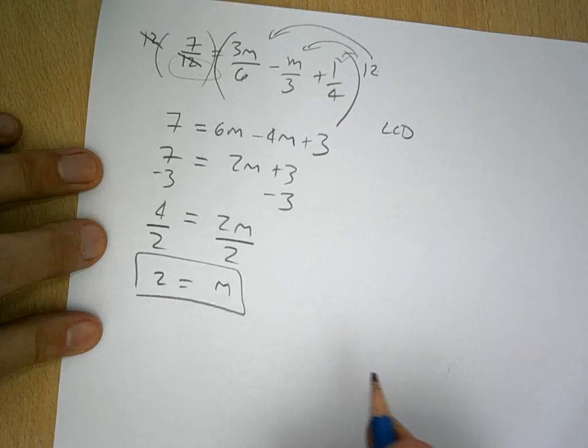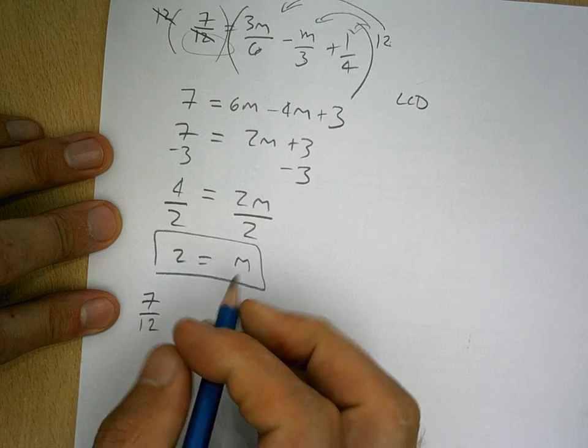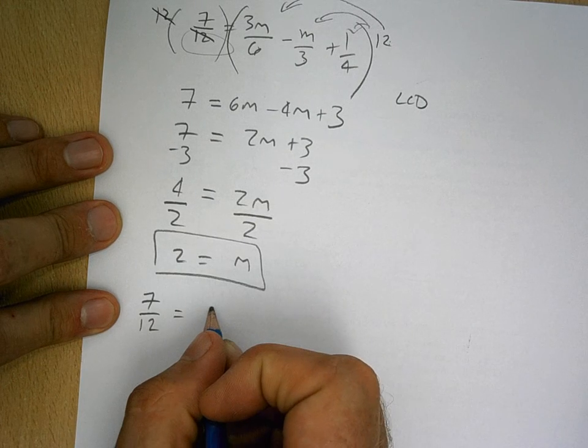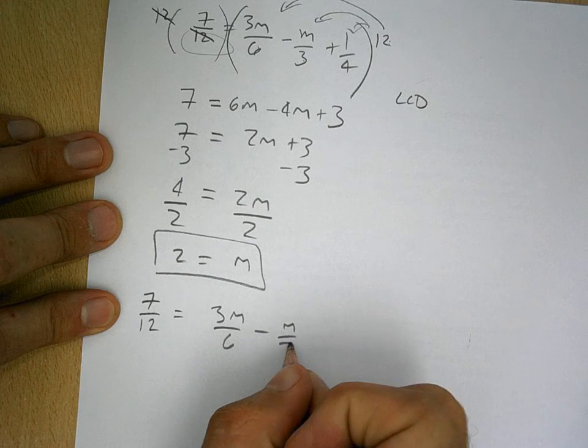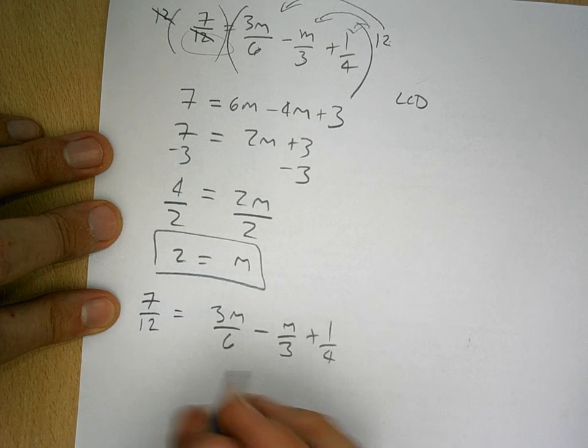So this is my answer, but the question is, is this correct? So what I'm going to do is I'm going to substitute this into the original equation. So I'm just going to write this down here really quick, and I'm going to put this 2 in for m.